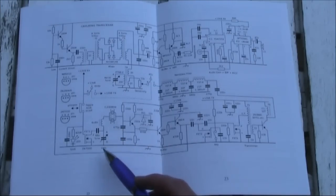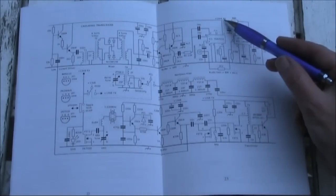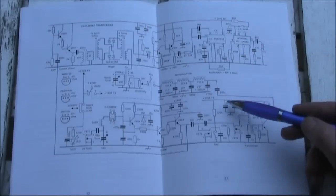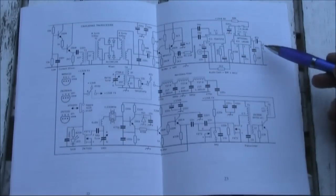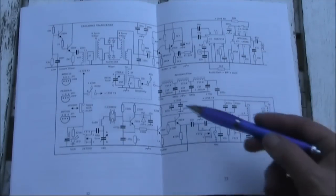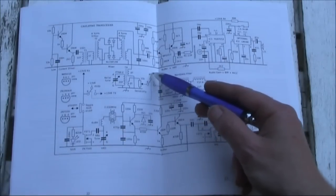The first thing we do is orient ourselves to the circuit. Here's 13.8 volts on receive, 13.8 volts on transmit, there's the speaker and somewhere, just here, is the antenna.